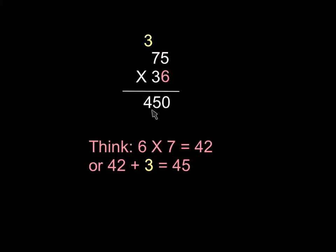Which we'll write down below just like we did before. So six times seventy-five is four hundred fifty.